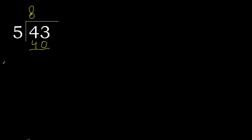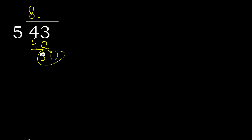43 minus 40 is 3. The next digit is not a number, therefore we complete. Always complete with 0. Here, with the decimal point: 0 point, and bring down 30.